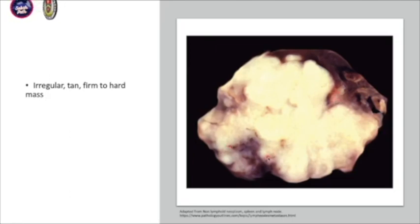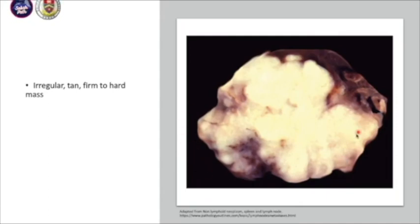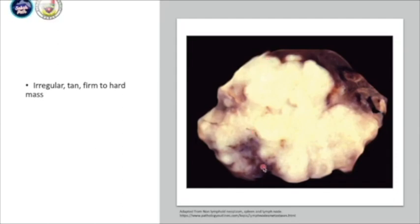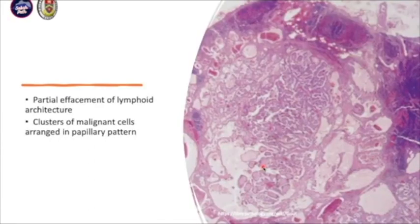But in this case, it's almost replacing all of the lymph node tissue. For undergraduates, we usually give you this kind of tissue in the exam. But in real life, some of the lesion is just confined to the subcapsular region, which makes it difficult for us to detect.